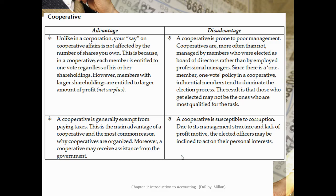An advantage is that a cooperative is generally exempt from paying taxes. This is the main advantage of a cooperative and the most common reason why cooperatives are organized. Moreover, a cooperative may receive assistance from the government. However, a disadvantage is that a cooperative is susceptible to corruption. Due to its management structure and lack of profit motive, the elected officers may be inclined to act on their personal interests.